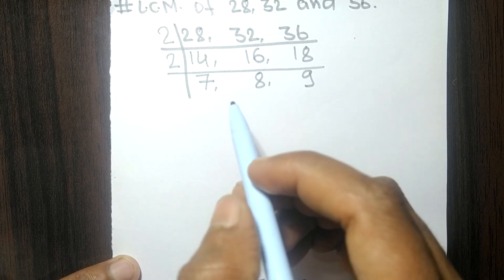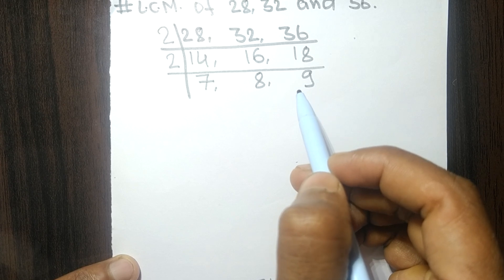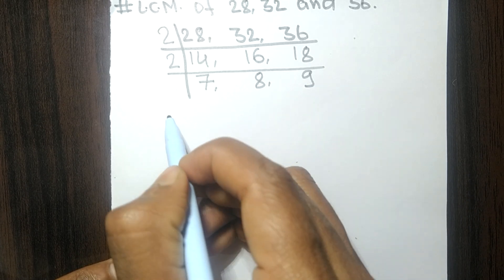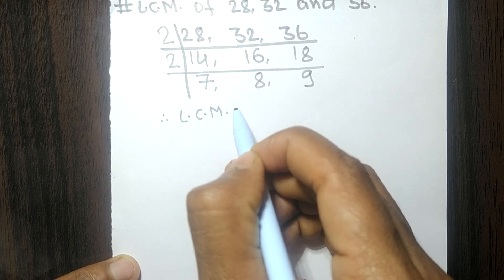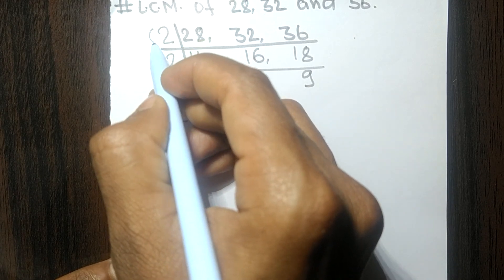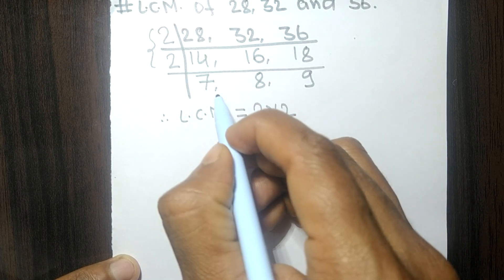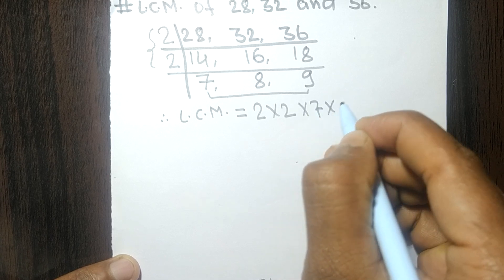Now the numbers 7, 8, and 9 are not exactly divisible by the same number. Therefore, its LCM is equal to, from this side it is 2 times 2, and from this side it is 7 times 8 times 9.